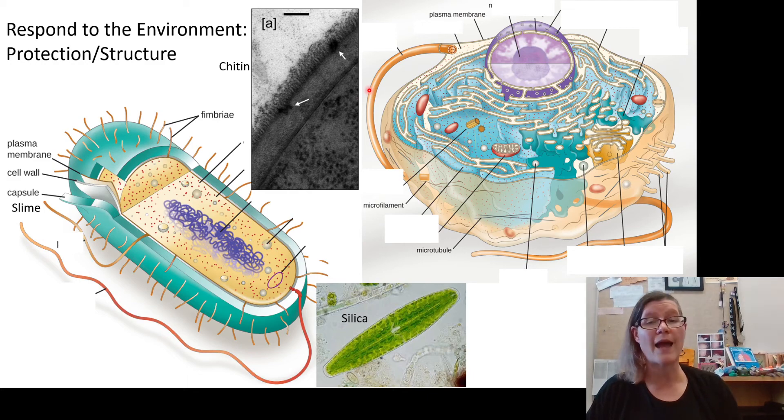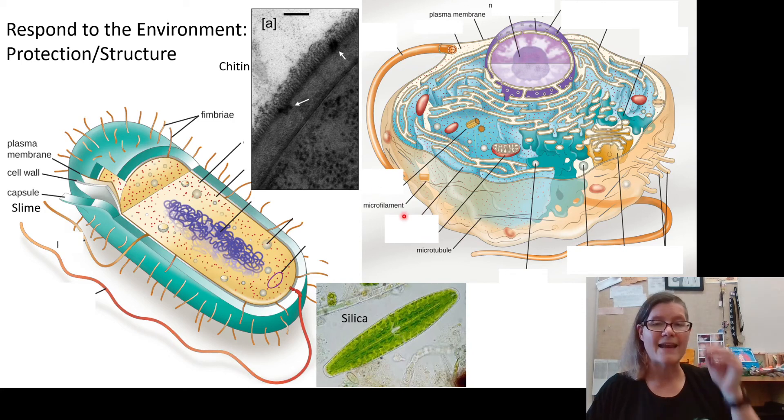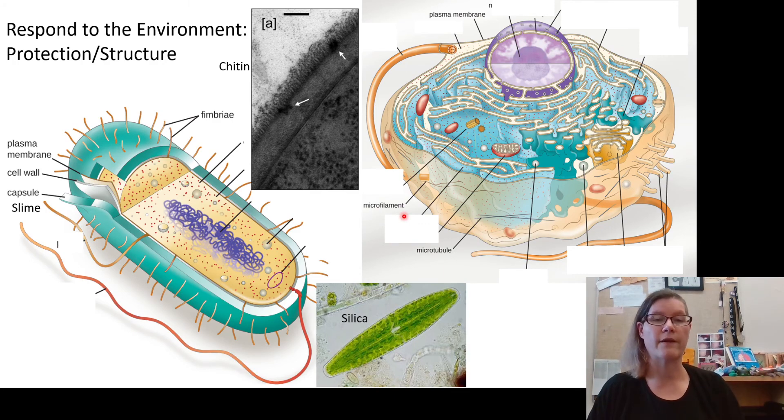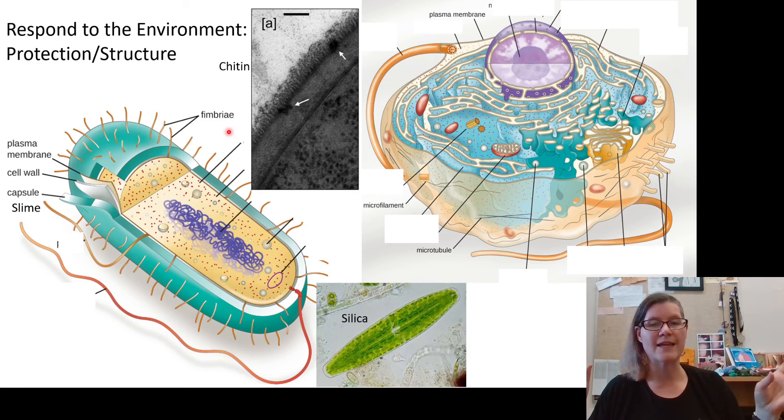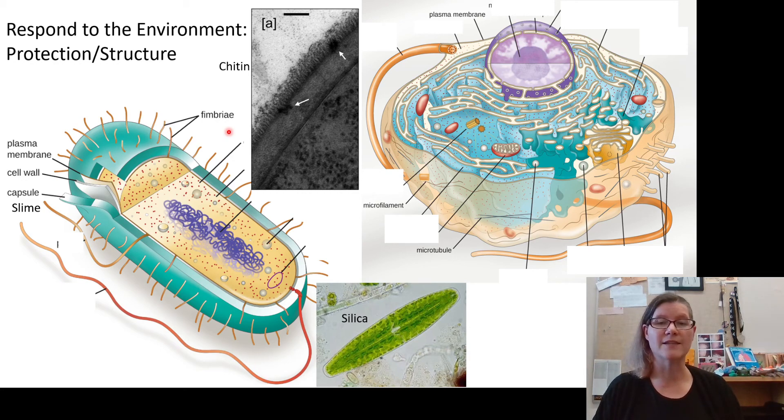One of the things the eukaryotes do have is the cytoskeletal system. So a lot of internal proteins that help them maintain the structure of their very large cells, something prokaryotes don't in fact need. Prokaryotes do have one more little additional thing, which are the fimbriae. They look like little hairs sticking out of the cell and they're often used for attachment, so grabbing onto something and holding to it. Prokaryotic structure is built partially on the cell but partially on the architecture of how many cells stick together and grab hold of something.